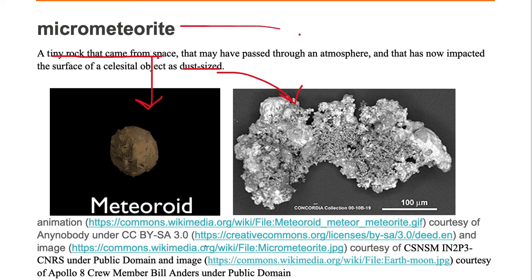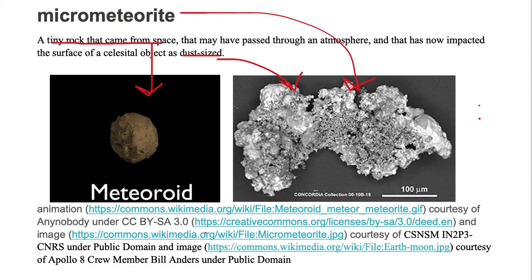On the right is an image of a micrometeorite. Notice the scale of a hundred microns indicates the object is several hundred microns in diameter — about the diameter of one of the hairs on your head. That's the size of a micrometeorite.